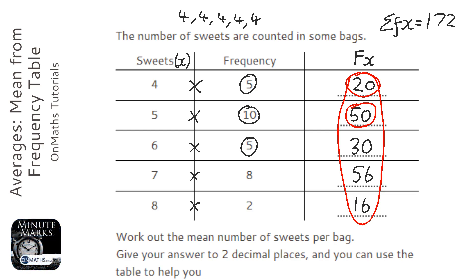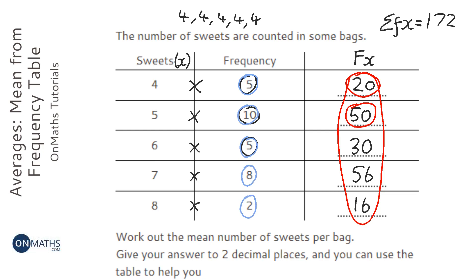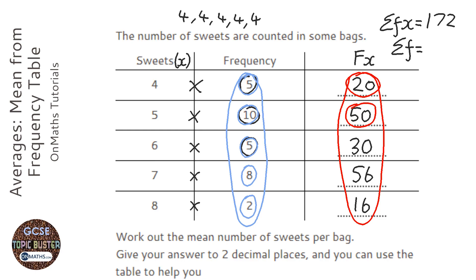Now that's equivalent to if we had a long list of numbers and just added them all up. But how many numbers do we have? Well, if we have five fours, ten fives, five sixes, eight sevens and two eights — how many do we have altogether? I call this the sum of the frequencies. We do five plus ten plus five plus eight plus two, which is thirty. So we have thirty altogether.